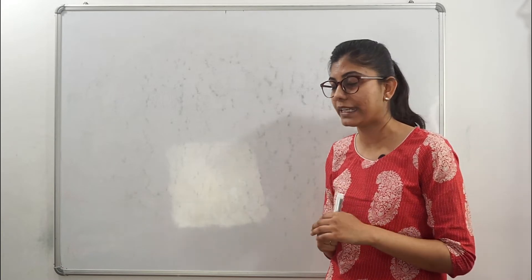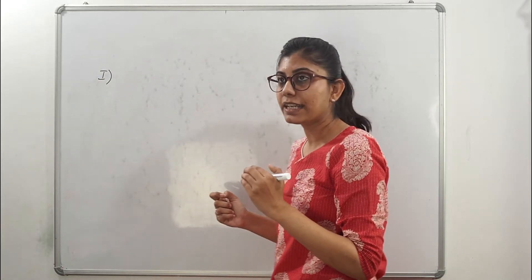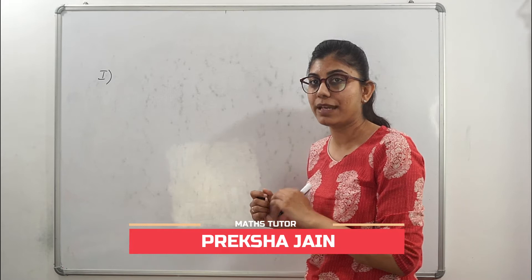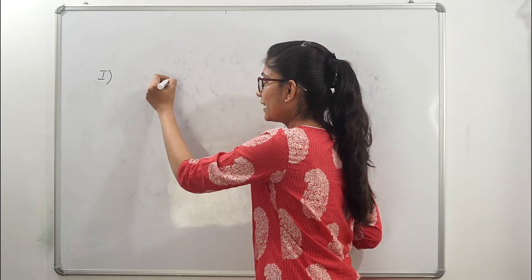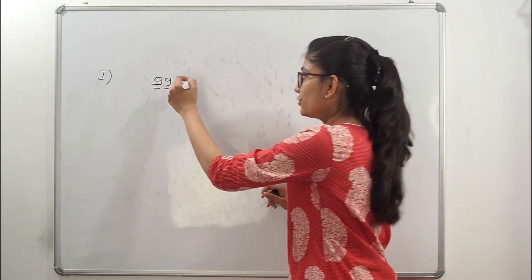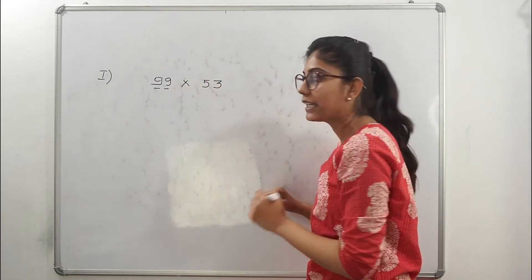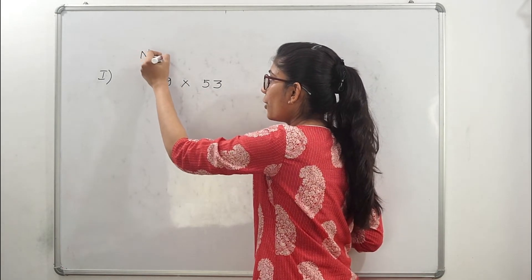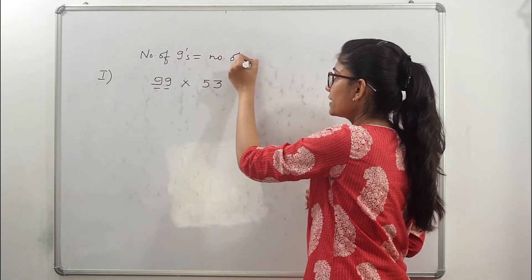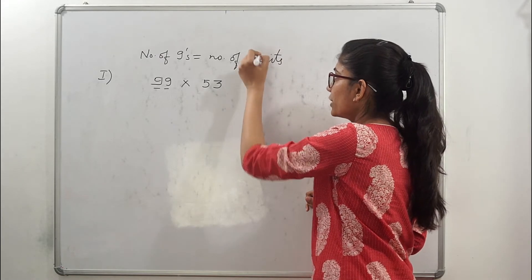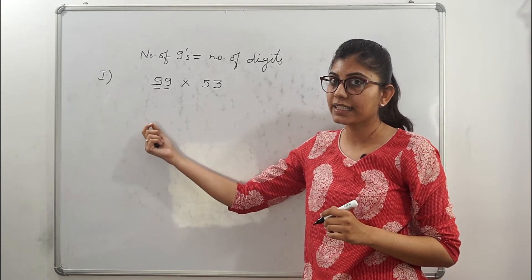These are divided into 3 parts. In the first part, we look at numbers where the number of 9s and the number of digits are the same. For example, suppose 99 — how many 9s are here? 2. And we multiply this with a number that also has 2 digits. Number of 9s equals number of digits. This also applies when the number of 9s is 3, like 999.